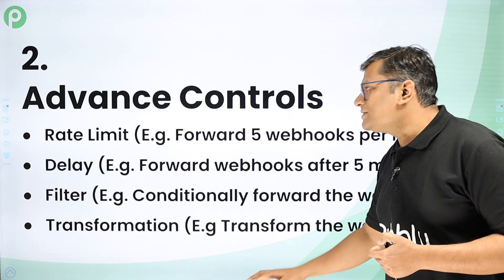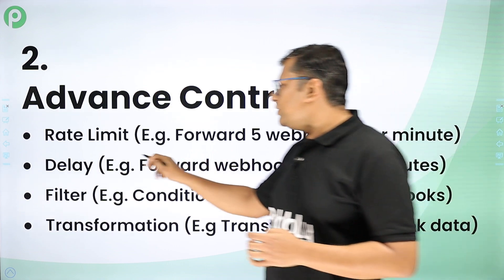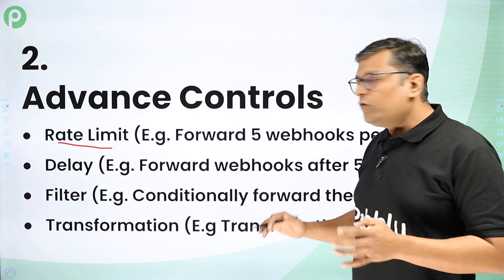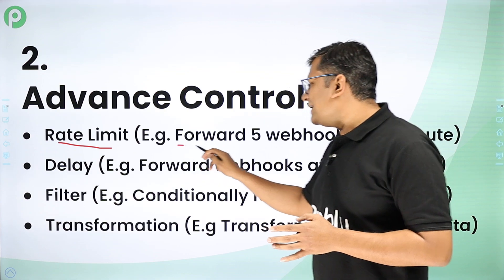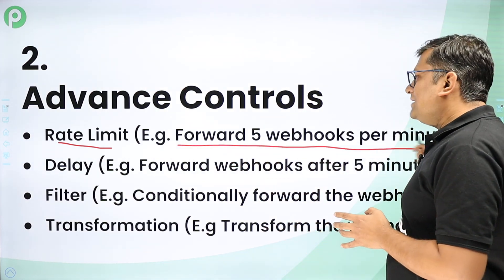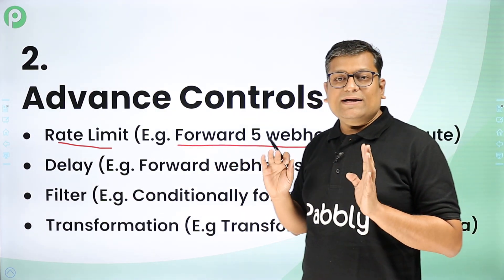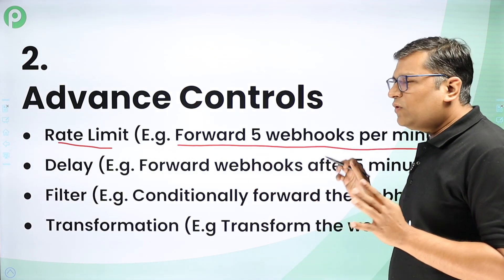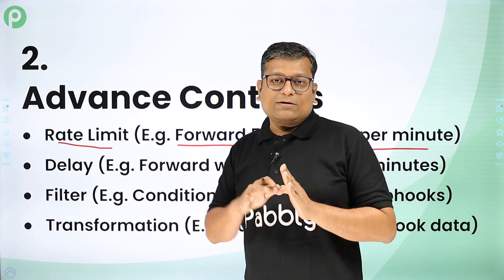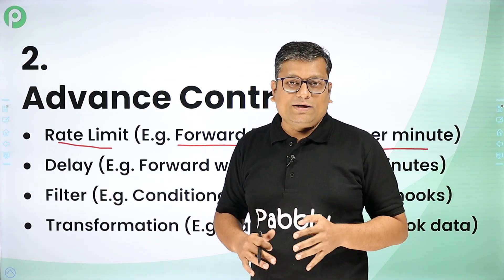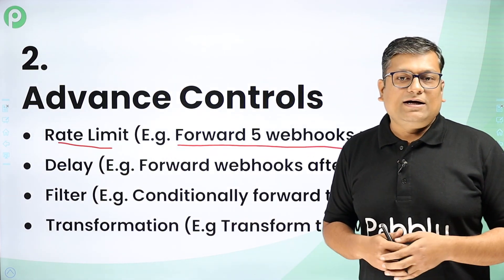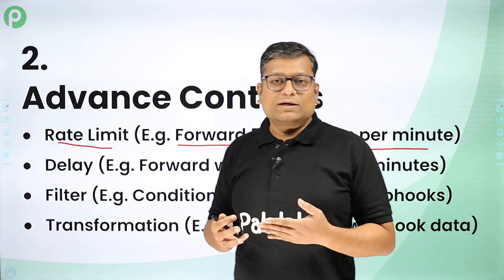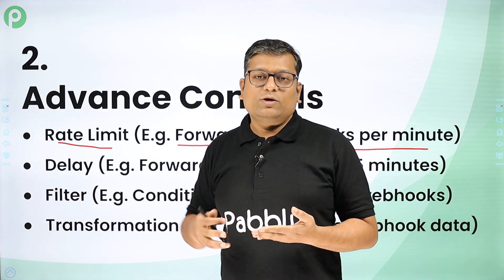Let me tell you what advanced controls you can set. The first thing is rate limiting — after receiving webhooks, before forwarding, you can set up rate limiting inside the Pablyhook connection. You can define that you want to forward five webhooks per minute to your destination, or set a rule to forward 100 webhooks per minute.